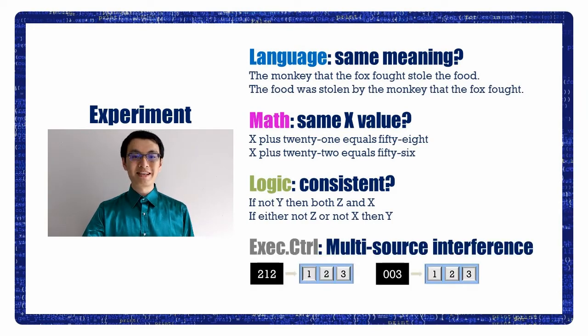To probe the executive control system, the participants did the multi-source interference task, or MSIT. In this task, an incongruence exists between the value of a digit and its position in a digit triplet. And incongruence required executive control to resolve.